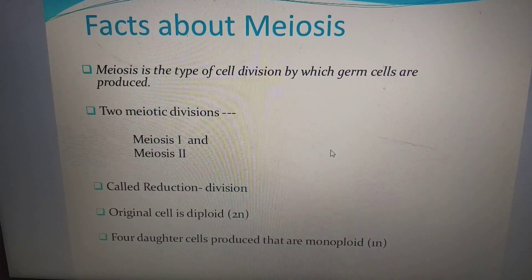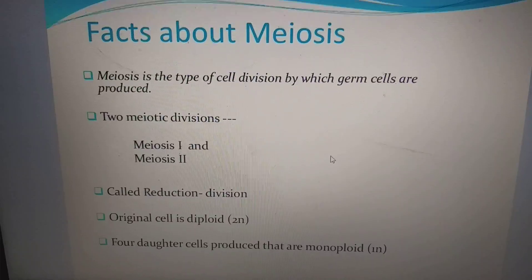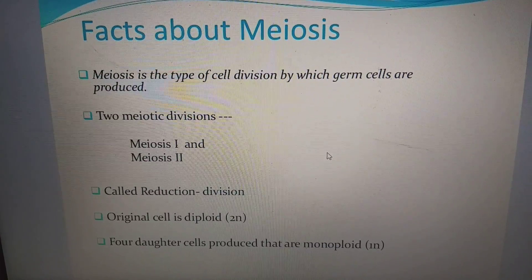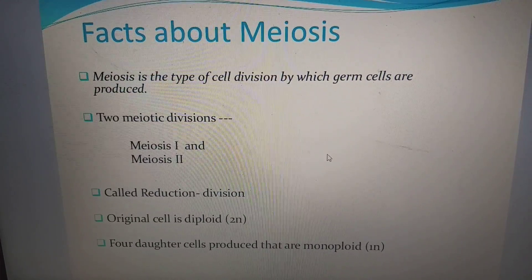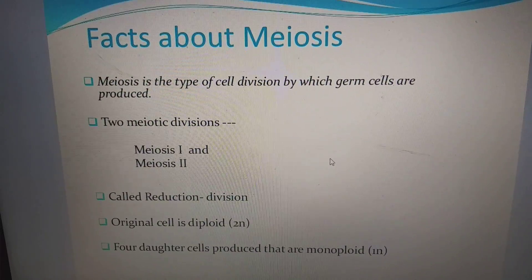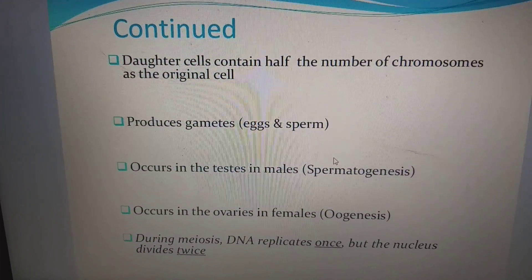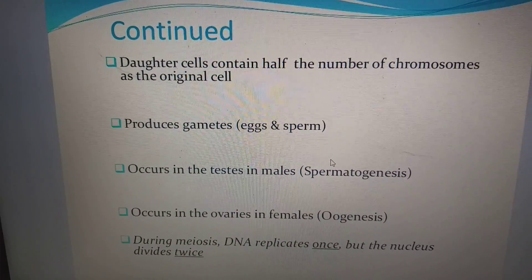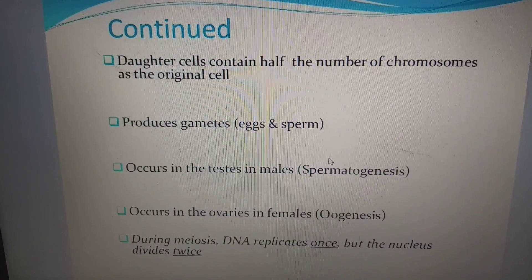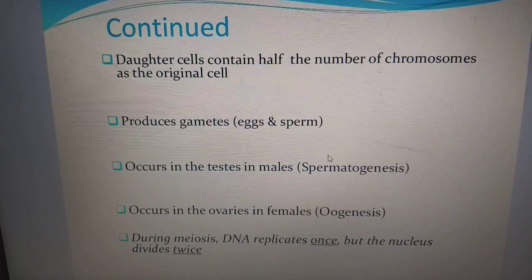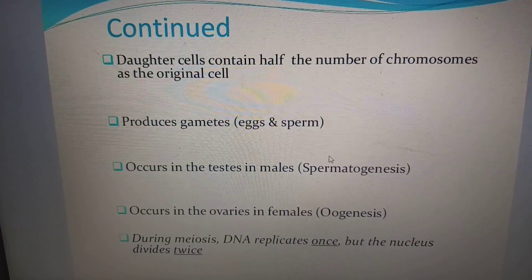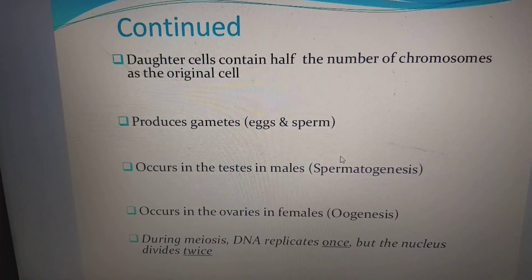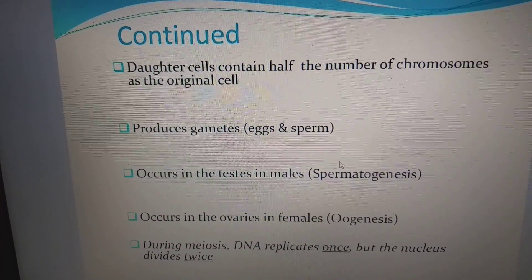Facts about meiosis: meiosis is the type of cell division by which germ cells are produced. There are two meiotic divisions — meiosis I and meiosis II, called reduction division. The original cell is diploid in nature and four daughter cells are produced that are monoploid. Daughter cells contain half the number of chromosomes as the original cell, producing gametes — egg and sperm. Meiosis occurs in the testis in males through spermatogenesis and in the ovaries in females through oogenesis. During meiosis, DNA replicates once but the nucleus divides twice — this is a very important point.